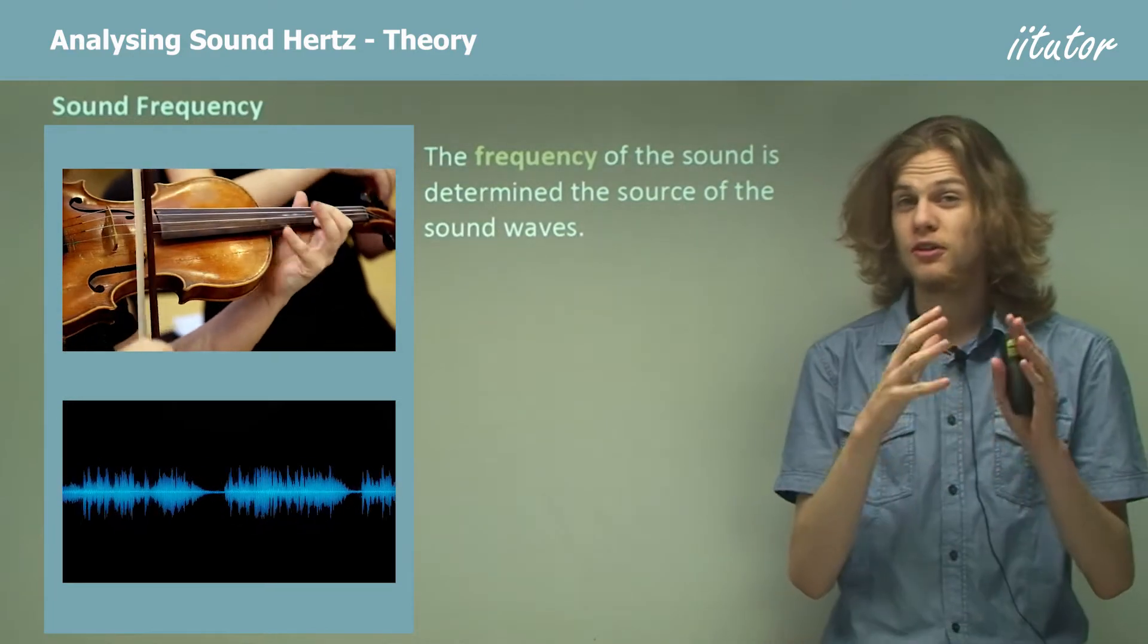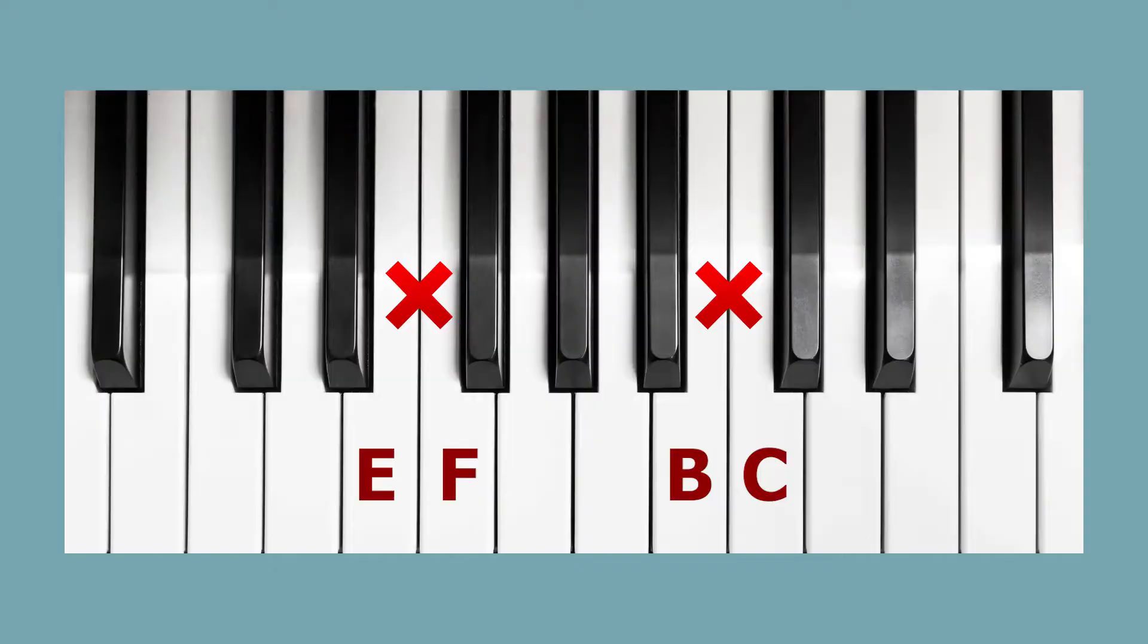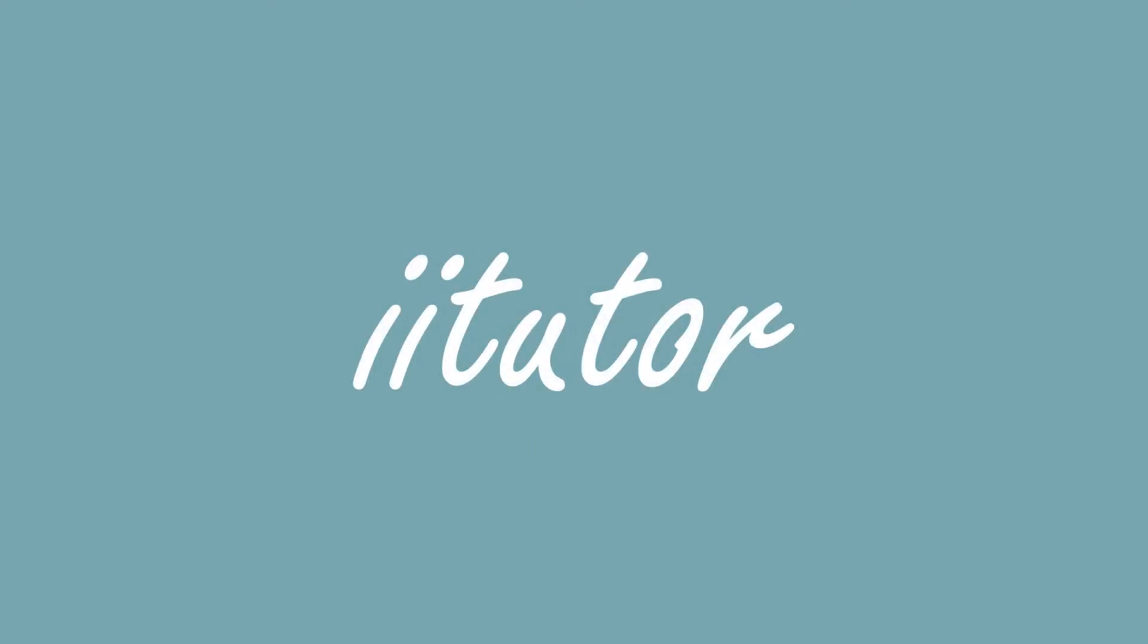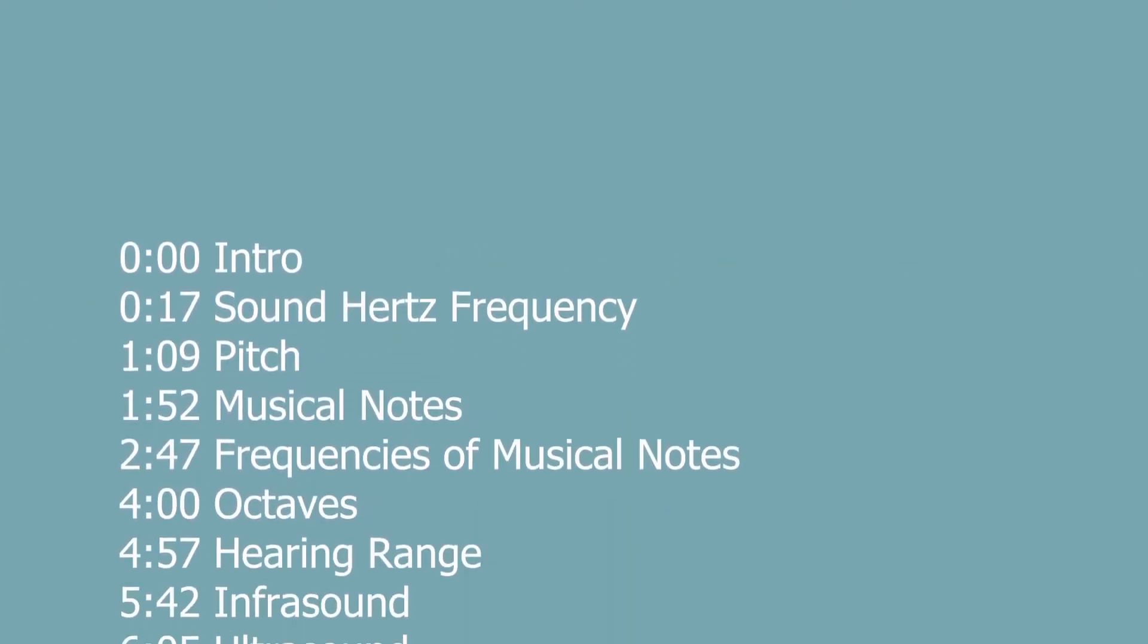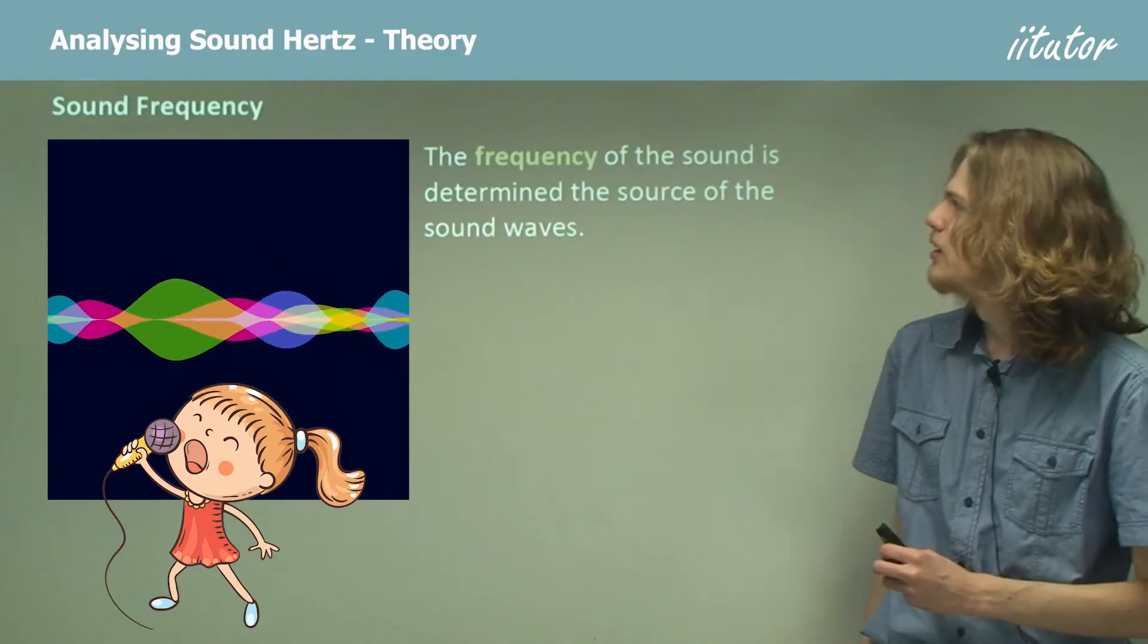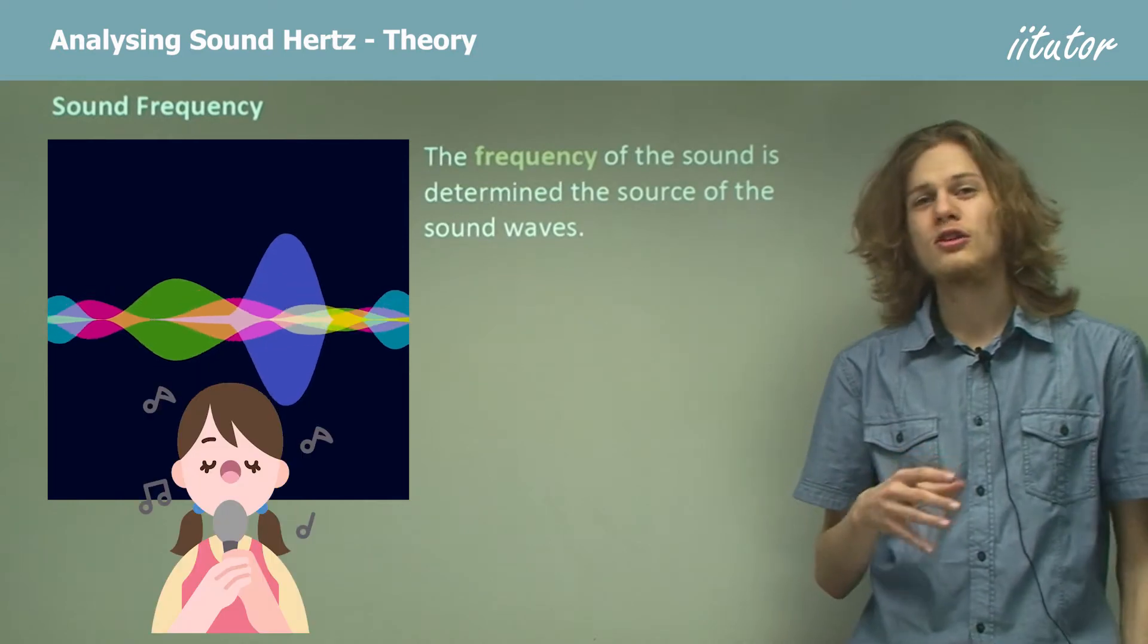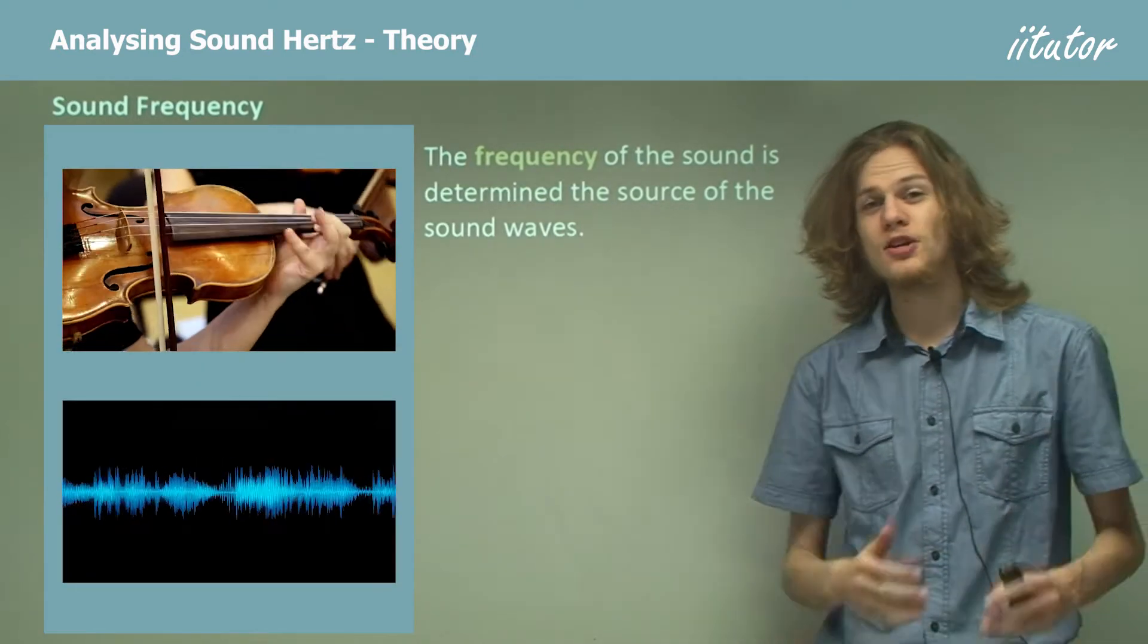A violin creates sound waves at a particular frequency. Now it turns out that the frequency of the sound wave depends only on the source that creates it. If, for example, a violin creates sound waves at a particular frequency, those sound waves will stay at that frequency until they run out of energy or get absorbed by something.